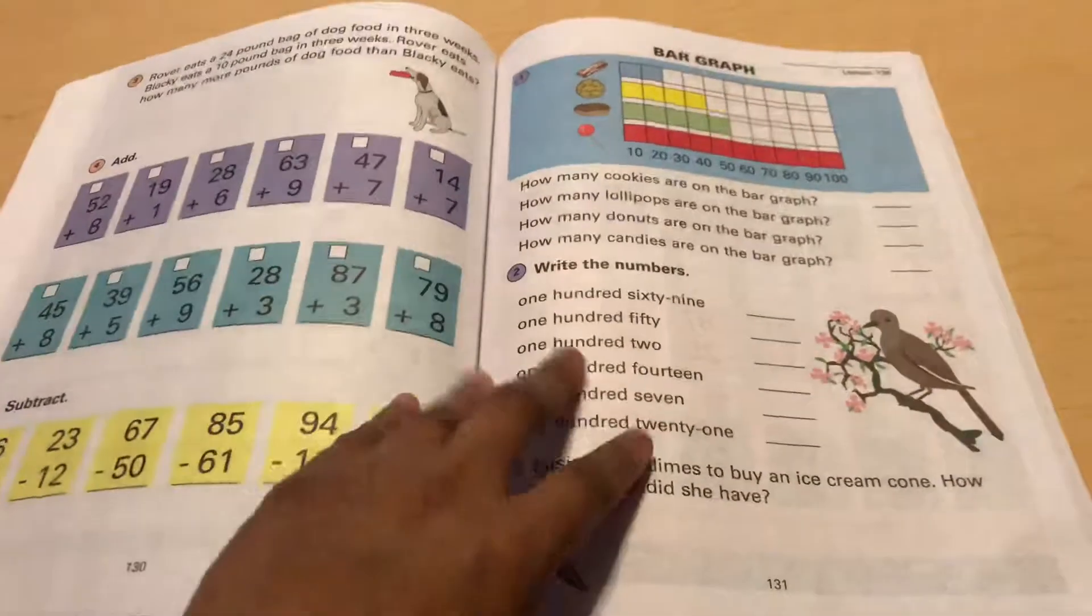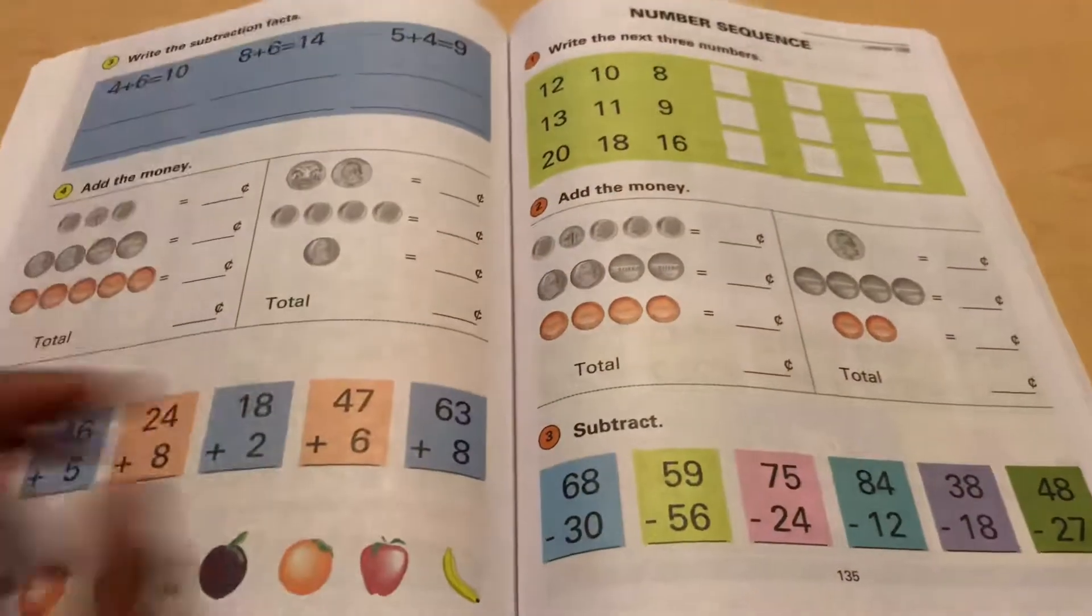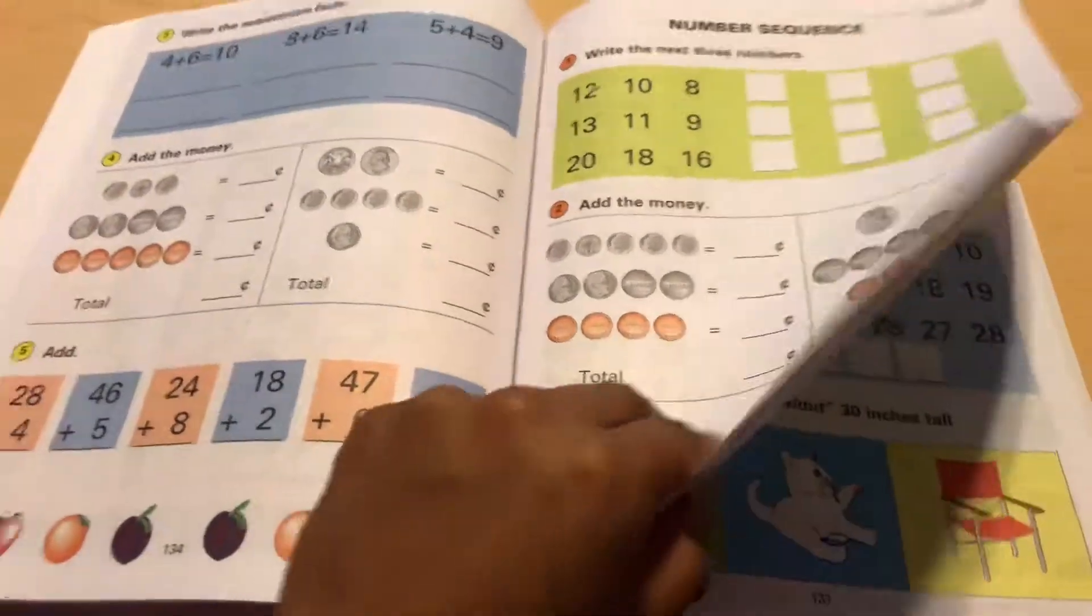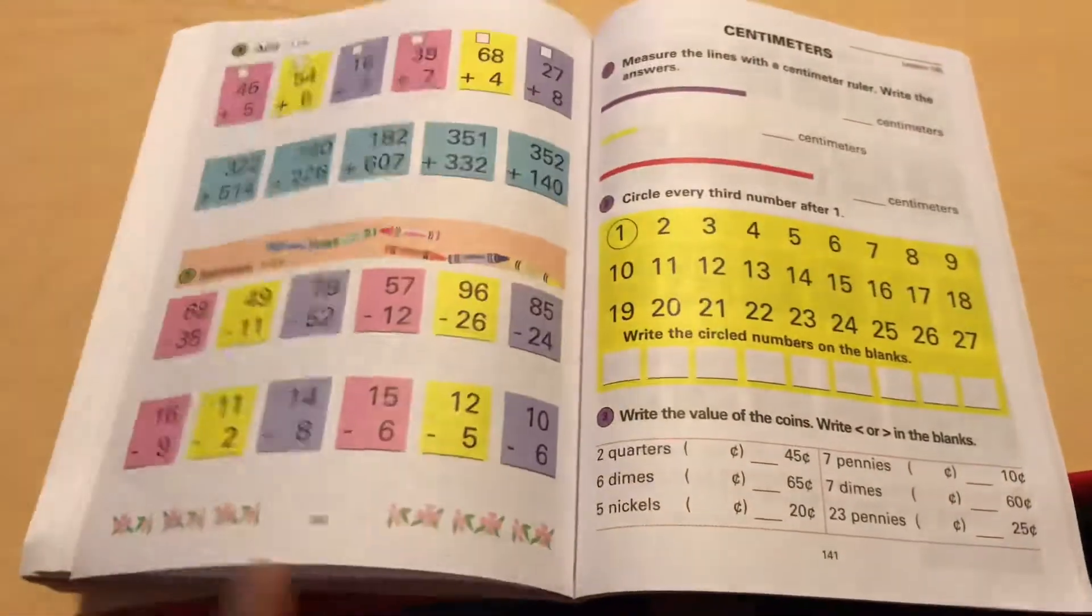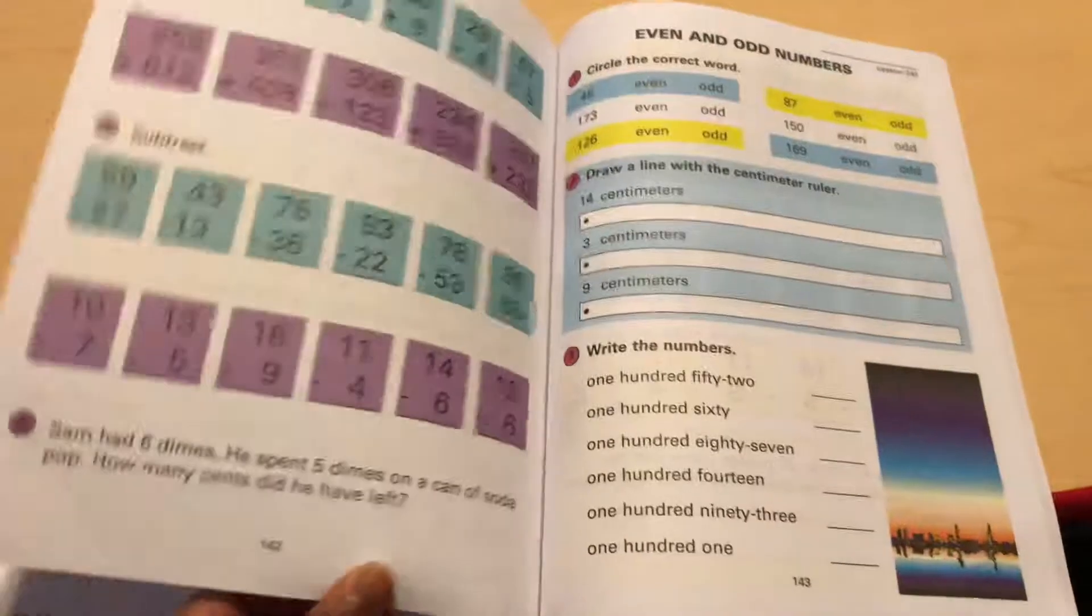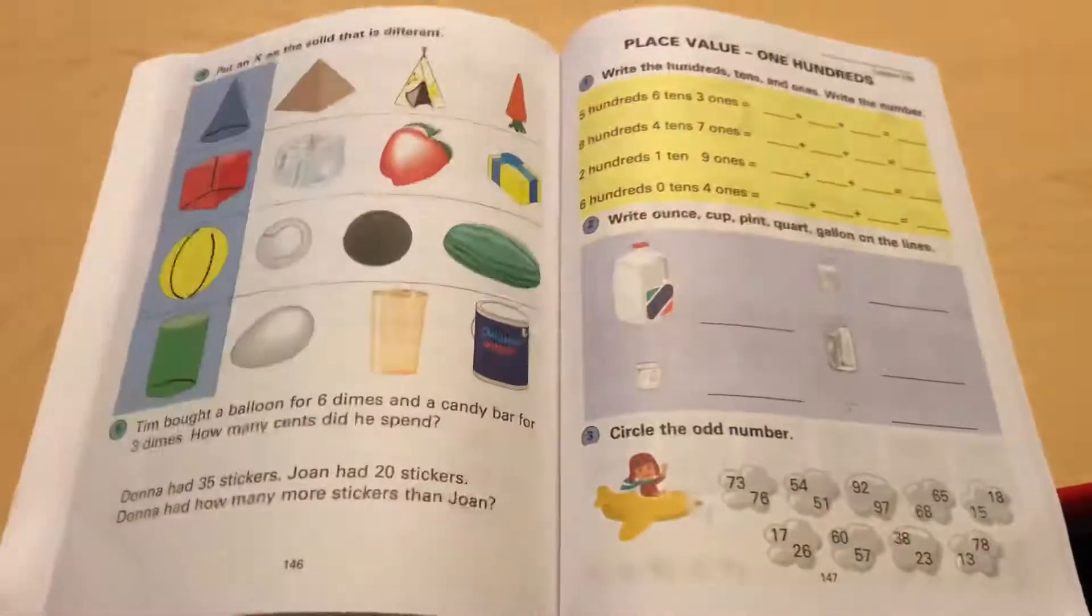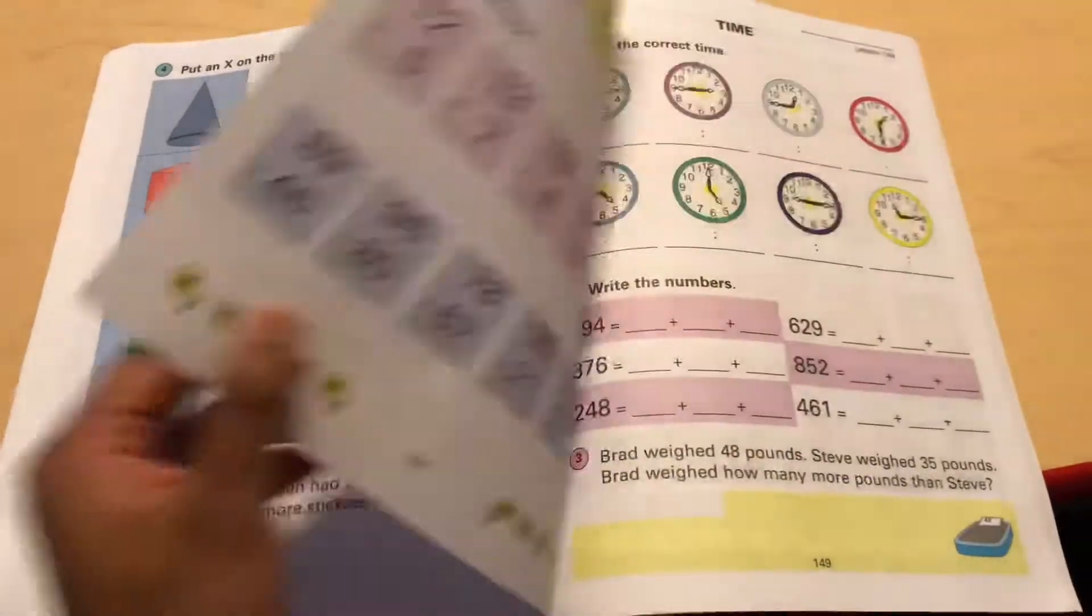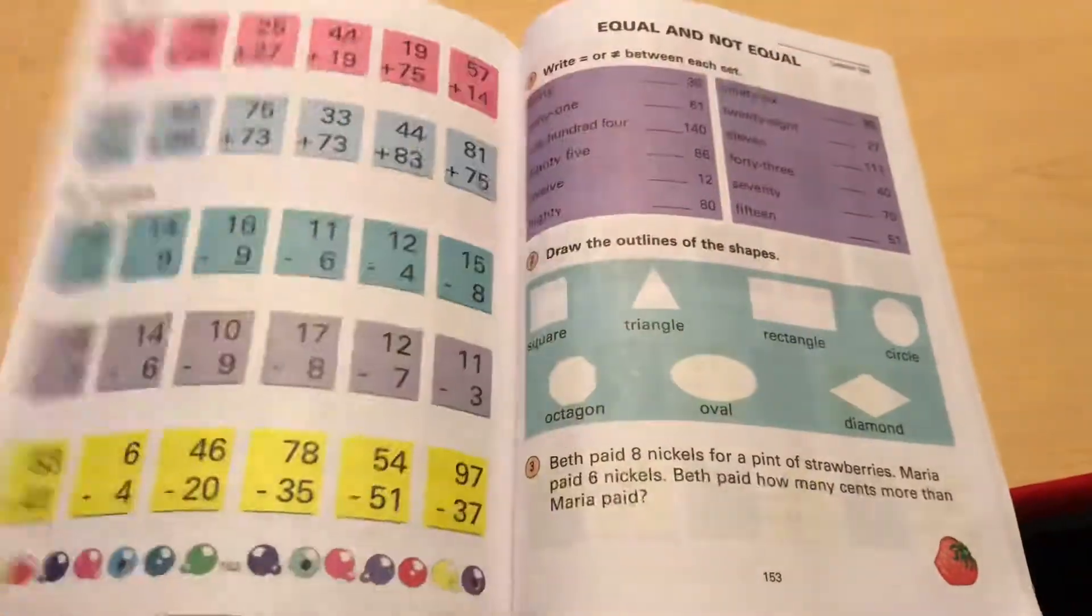Even if she struggles a little bit with it, like right now, she's struggling only with time. Because time is a complicated thing to teach to a child. Especially the way that time is in this book is a little bit more difficult to understand. But she's picking it up really good. And she's able to do this like 80% independently. There's certain times where she needs help.